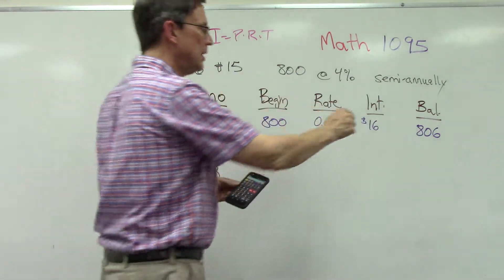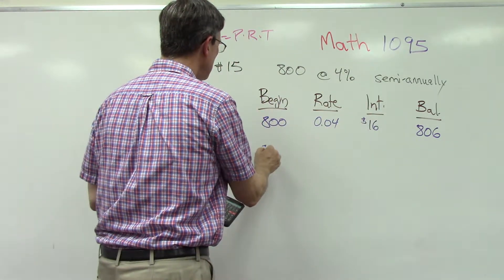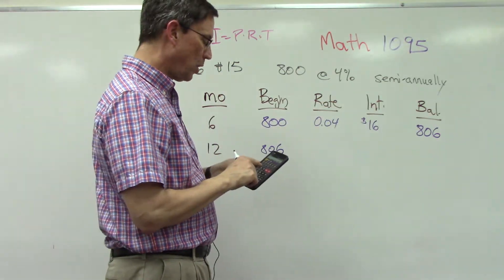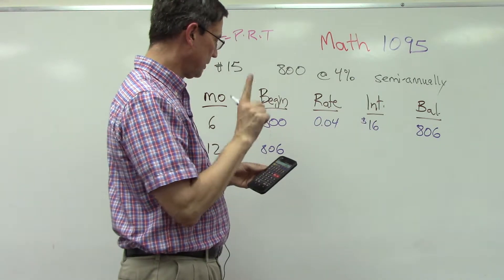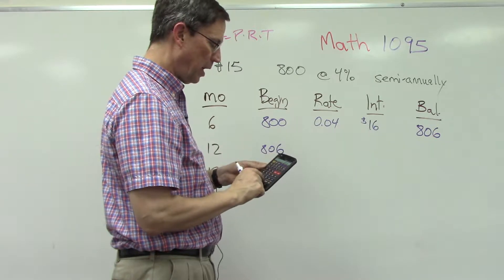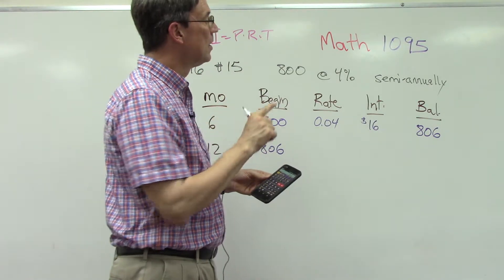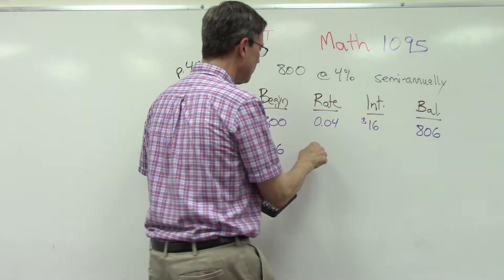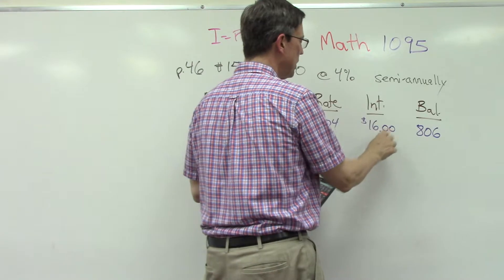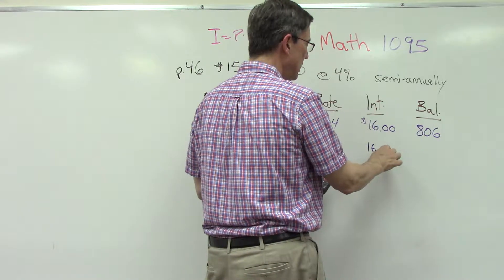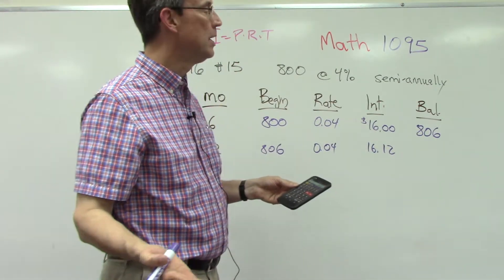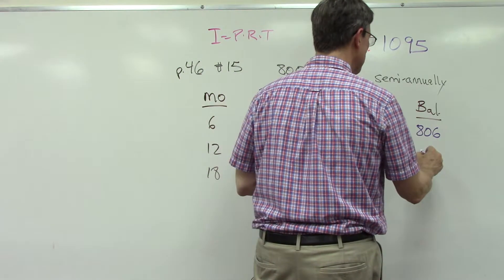Now here's the magic - watch this. I take this ending balance and that becomes the new starting balance for the next six months. So I'm going to take 806, now times 0.04 times 0.5, because the rate hasn't changed but now the interest has changed. Because instead of just being $16, it's $16 and 12 cents.